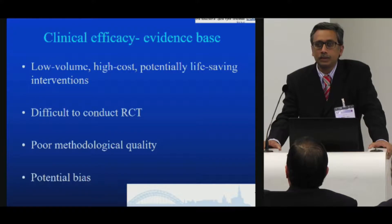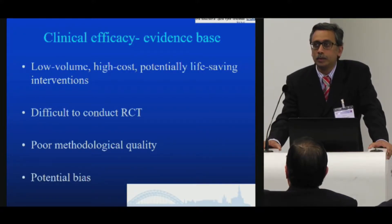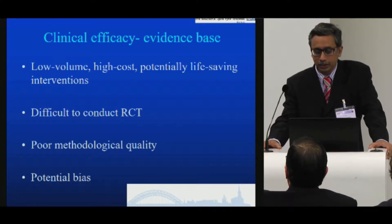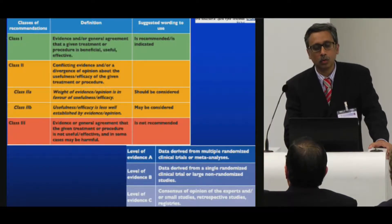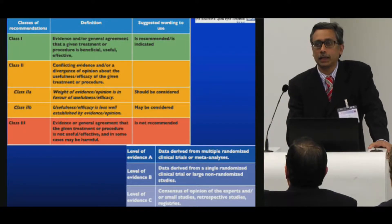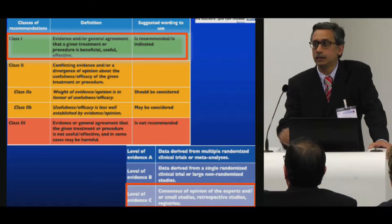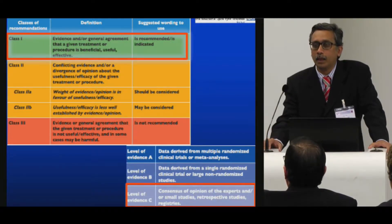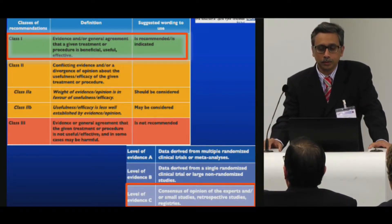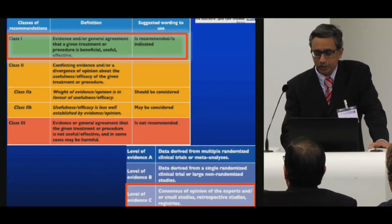It's quite difficult to conduct meaningful randomized controlled trials. The poor methodological quality of the evidence base and the potential bias means that a lot of the evidence you will see is usually class one and level C, which is basically consensus of expert opinion, retrospective studies, data trawling through registries, et cetera.